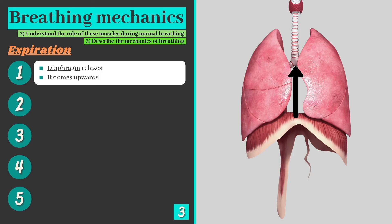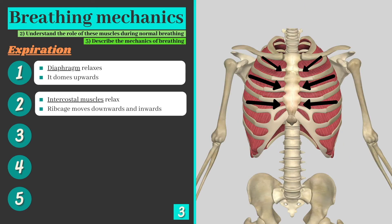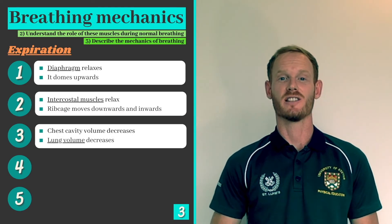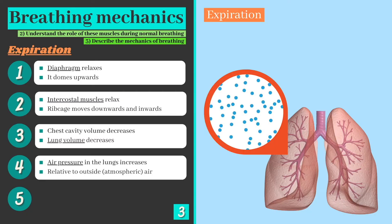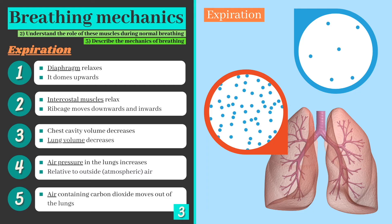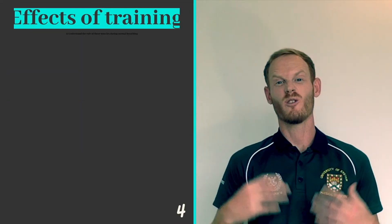When we breathe out, the diaphragm relaxes and domes upwards. The intercostal muscles also relax, causing the rib cage to move downwards and inwards. The chest cavity gets smaller as a result of these actions and lung volume decreases. This causes the air pressure within the lungs to rise above that of the atmospheric air. This pressure difference causes carbon dioxide-rich air to rush out of the lungs before the next inhalation.